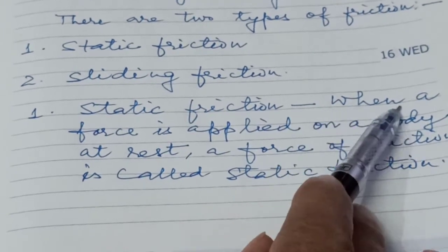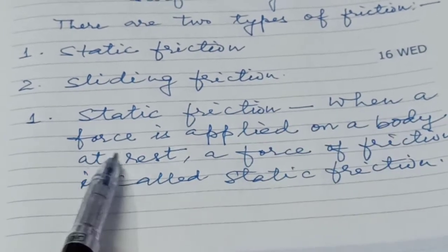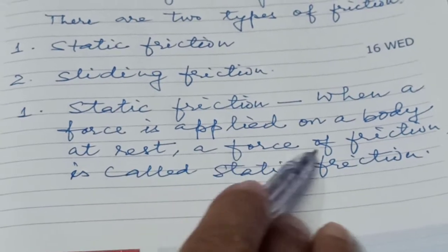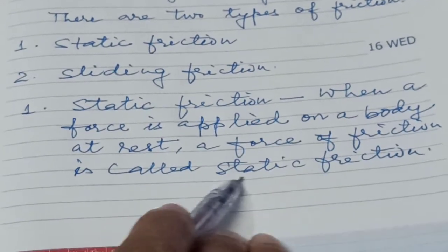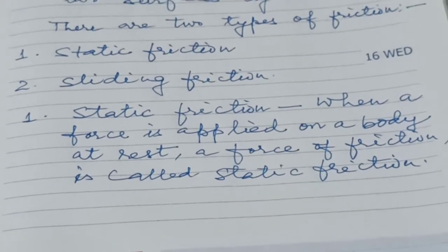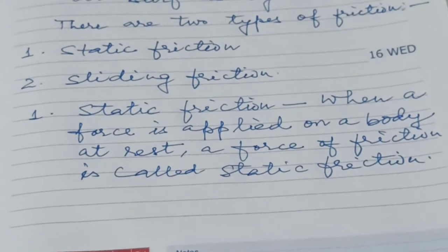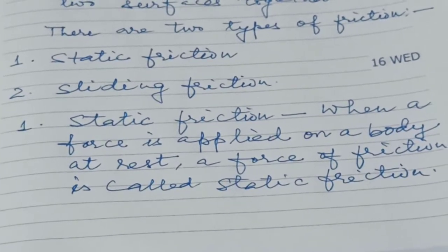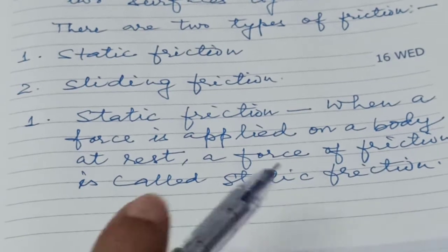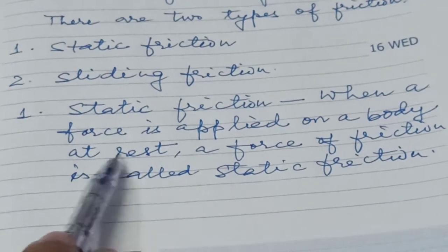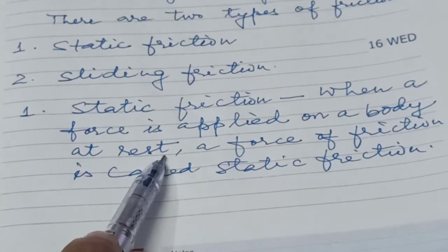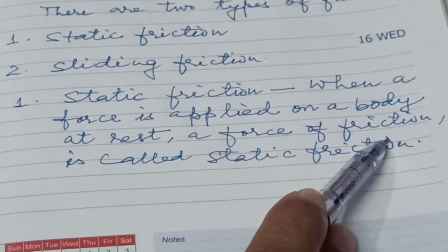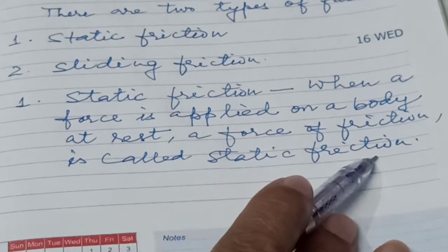When a force is applied on a body at rest, the force of friction is called static friction. You are applying force on the car, the car is not moving from its place — it is still at rest. Then we can say that this type of force of friction is called static friction.